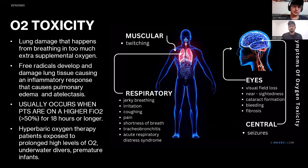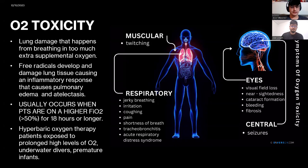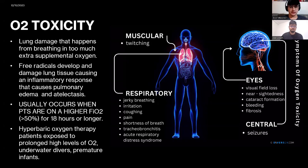Symptoms of O2 toxicity include: muscular — twitching; respiratory — jerky breathing, irritation, coughing, pain, shortness of breath, tracheal bronchitis, and acute respiratory distress syndrome; eyes — visual field loss, nearsightedness, cataract formation, bleeding, and fibrosis; and central nervous system — seizures.